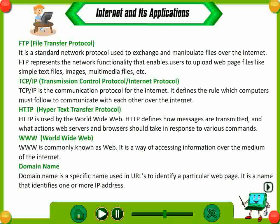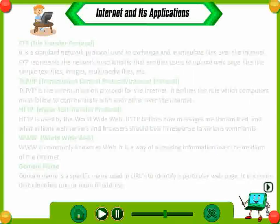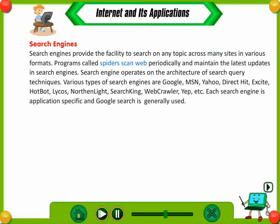Search engines provide the facility to search on any topic across many sites in various formats. Programs called spiders scan periodically and maintain the latest updates in search engines. Search engines operate on the architecture of search query techniques. Various types of search engines are Google, MSN, Yahoo, Direct Hit, Excite, Hotbot, Lycos, Northern Light, Search King, Webcrawler, Yeap, etc.